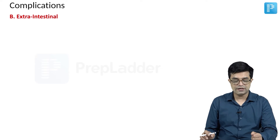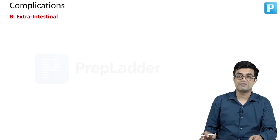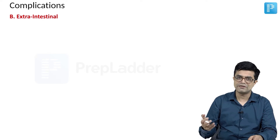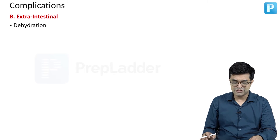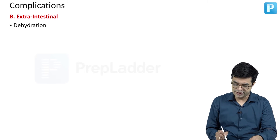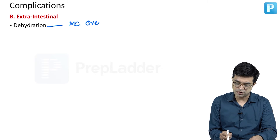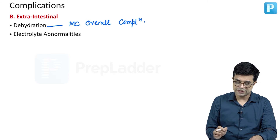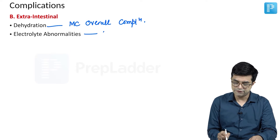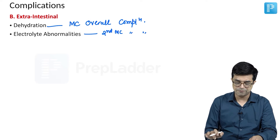Then we have extra-intestinal complications, some of which are already asked MCQs. First is dehydration, considered to be the most common overall complication in childhood diarrheas. Second is electrolyte abnormalities, which is the second most common overall complication.